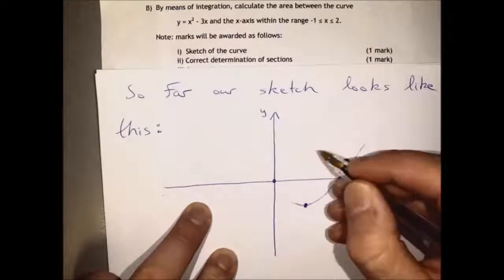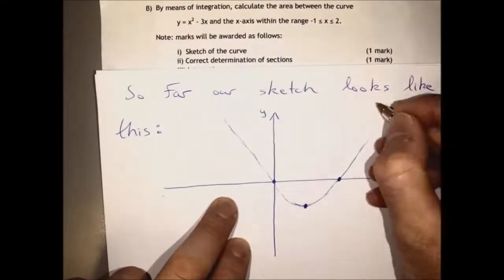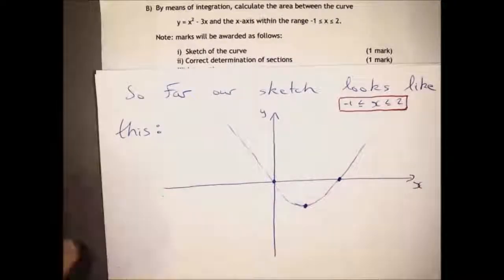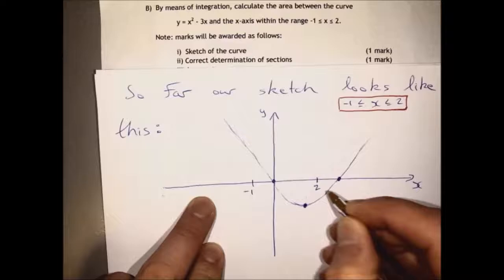And we had a minimum point, and our interest is bounded by the range given in the question: x less than or equal to two and greater than or equal to minus one. So those lines x equals